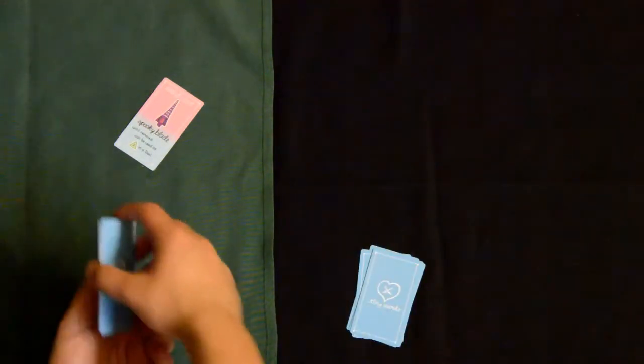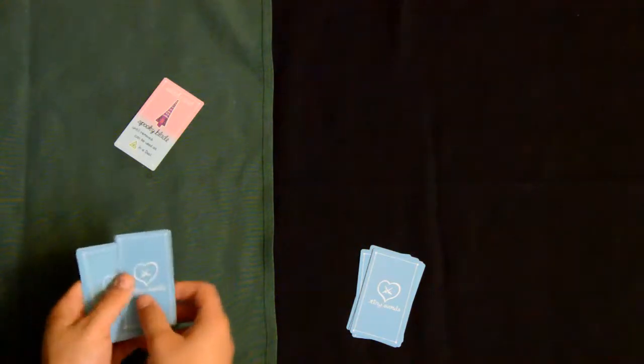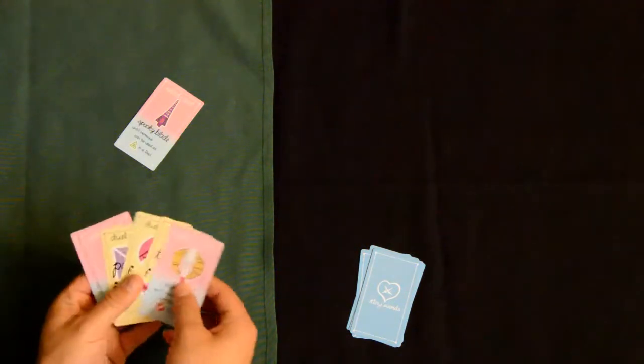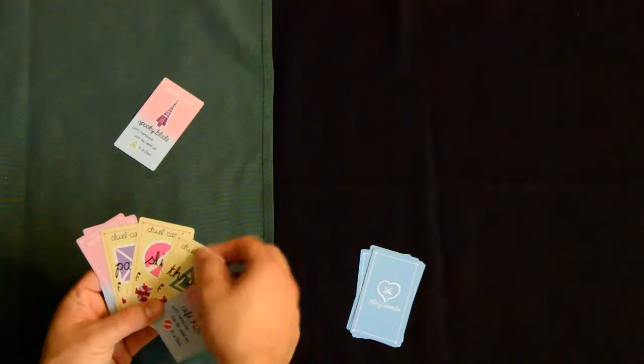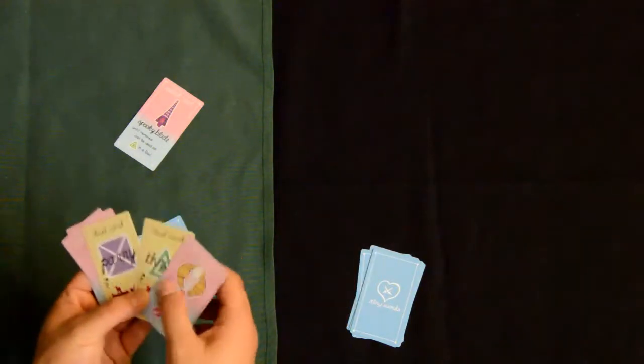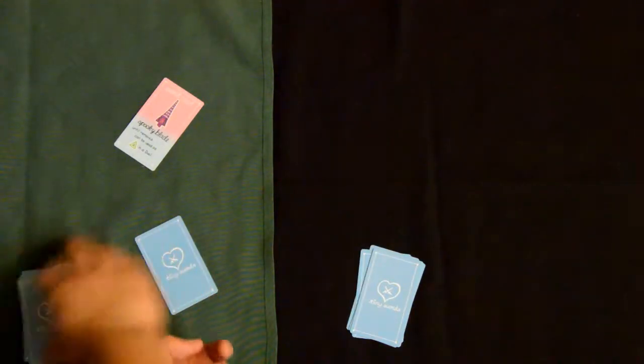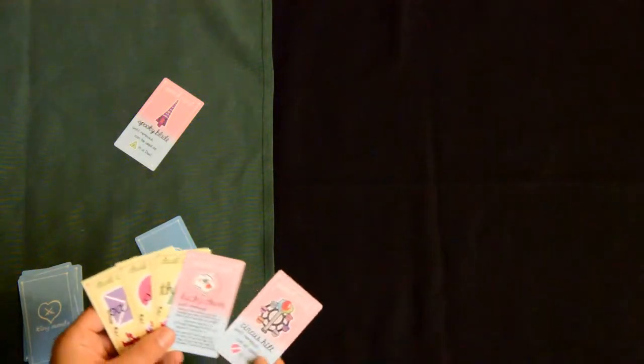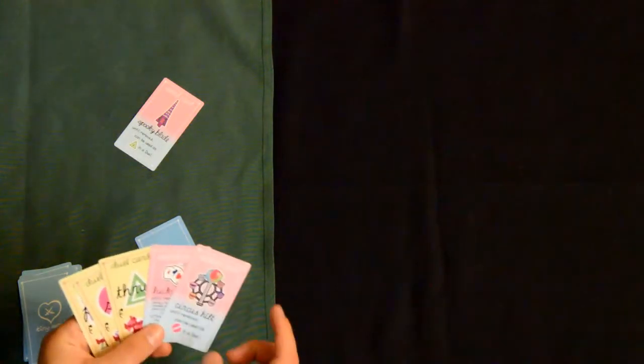So once that happens, the cards are reshuffled and the game continues. So this player is going to play with slice this time. Now keep in mind, and I'll show you it over here, that if you want to maybe trick up the opponent, you can use your hilt, which can be used as a slice in duel.